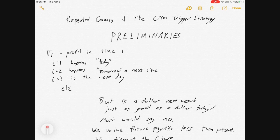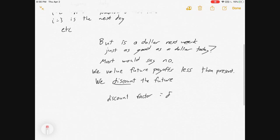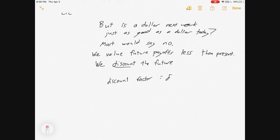So let's lay out some preliminaries. We've got pi i is profit in time i. So if i equals 1, that's what happens today, i equals 2 is what happens tomorrow, and so on. And then we got to ask the question, is a dollar next week just as good as a dollar today? And usually the answer is no. We tend to discount the future, and so we're going to have a discount factor that we will just call delta.